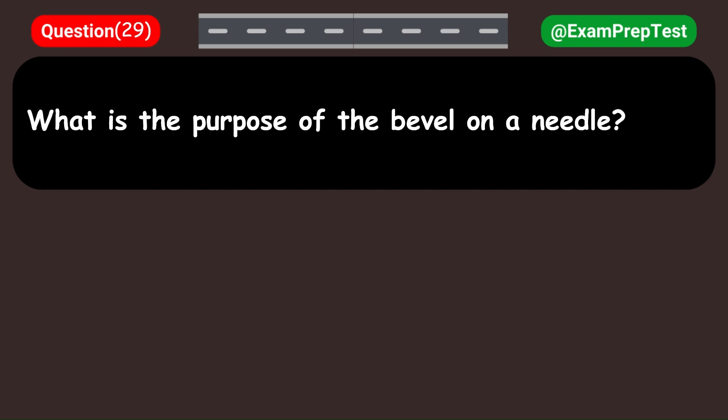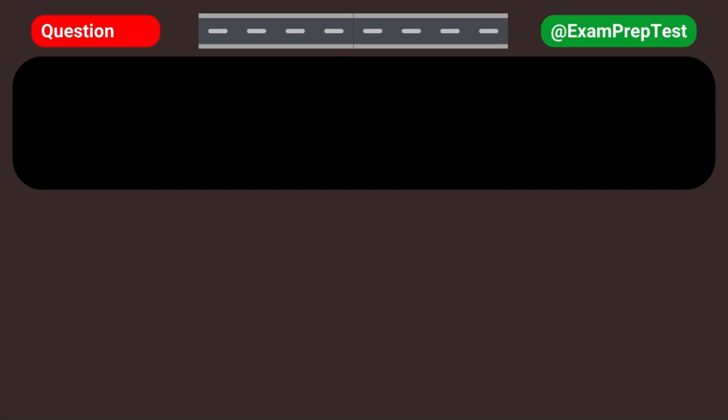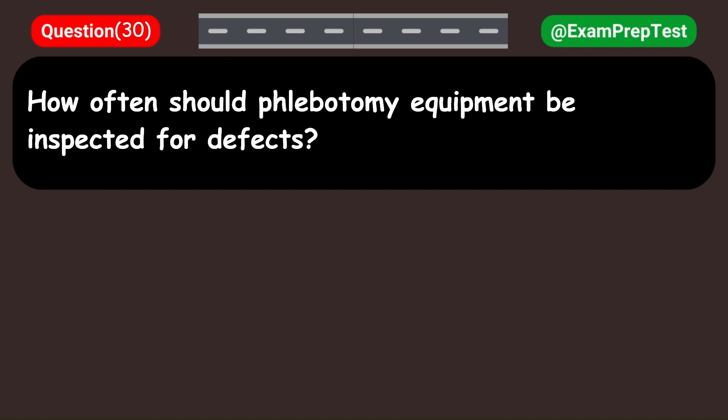What is the purpose of the bevel on a needle? A. To stabilize the needle in the vein. B. To allow for a smoother insertion. C. To prevent backflow of blood. D. To increase blood flow. Answer: B. To allow for a smoother insertion.